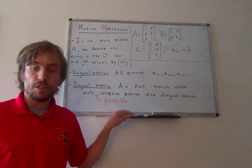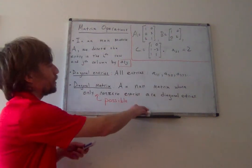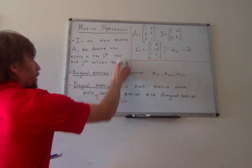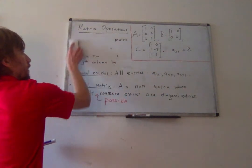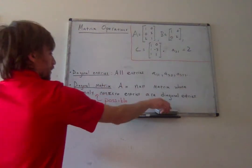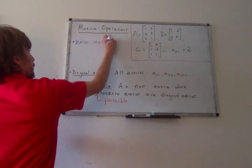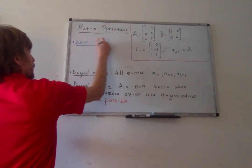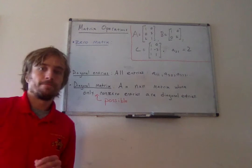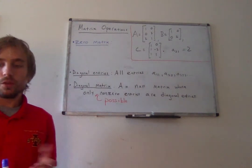Alright, last definition. I think is maybe the most straightforward definition of the bunch. The zero matrix. It's just the matrix with only zero entries.